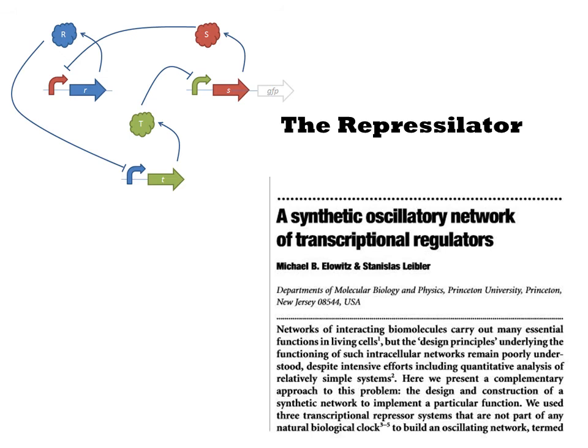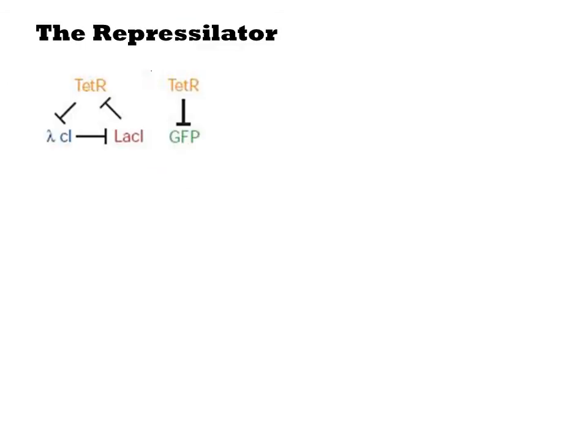In contrast to the toggle switch, the repressilator is based on three mutually repressing transcription factors. Two of these three inverters are the same ones as those used in the toggle switch, TETR and LACI controlling PTET and PLAC respectively. The third inverter uses the lambda repressor.